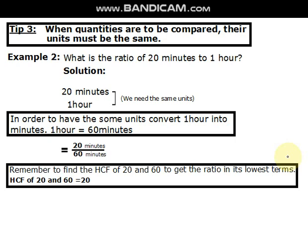Highest common factor of 20 and 60 is equal to 20.